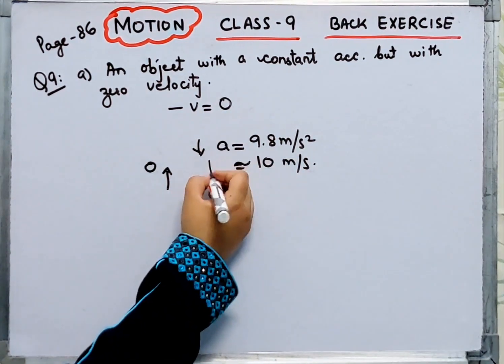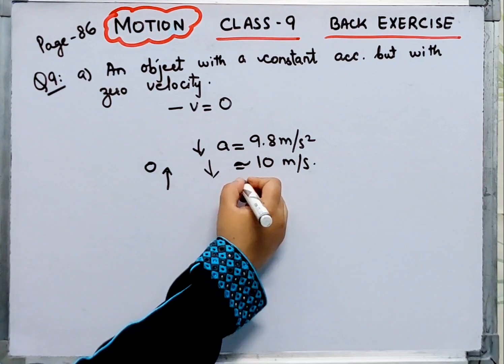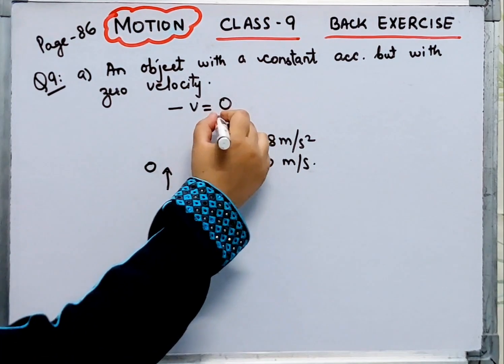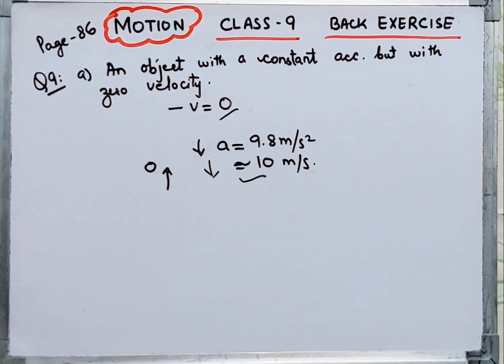So when you throw something up, what happens? It gives gravity against acceleration, that is acceleration due to gravity. So here you have acceleration and your velocity is zero. So this is a perfect example of this situation.